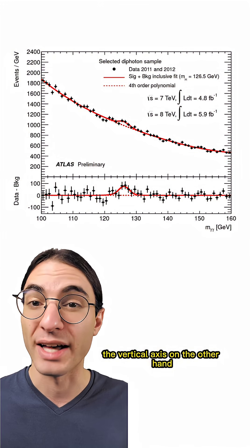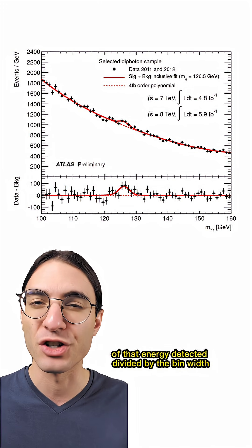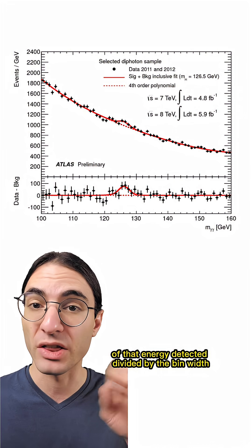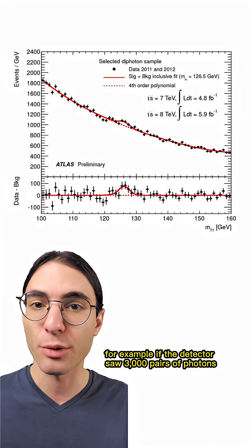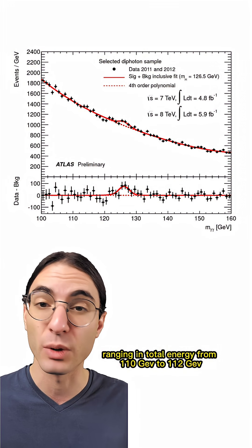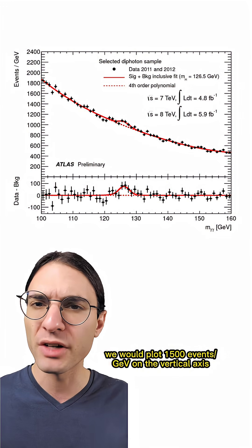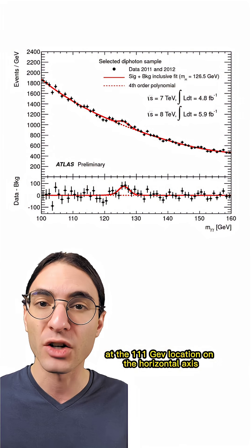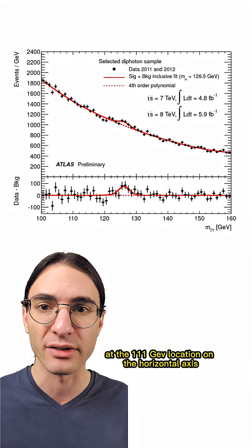The vertical axis, on the other hand, is merely a count for the number of pairs of photons of that energy detected divided by the bin width. For example, if the detector saw 3000 pairs of photons ranging in total energy from 110 GeV to 112 GeV, we would plot 1500 events per GeV on the vertical axis at the 111 GeV location on the horizontal axis.